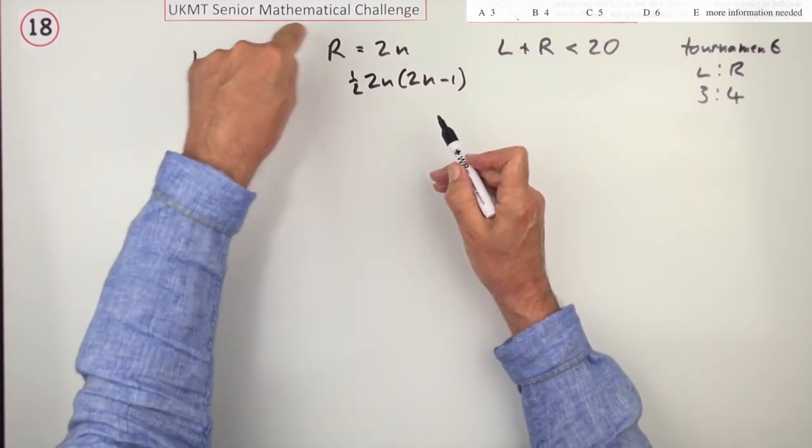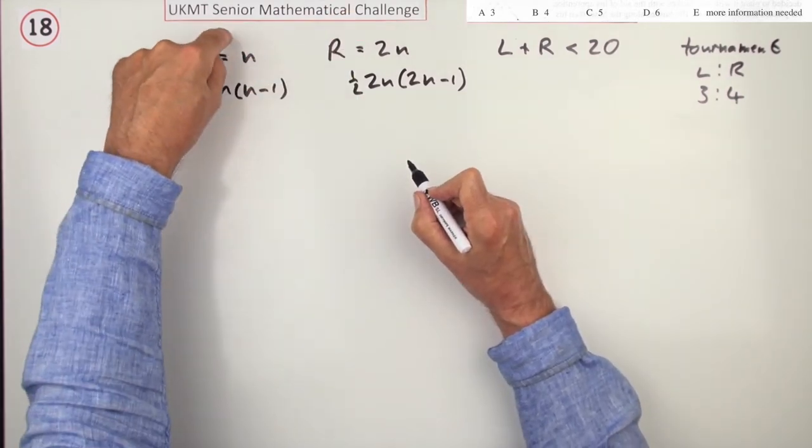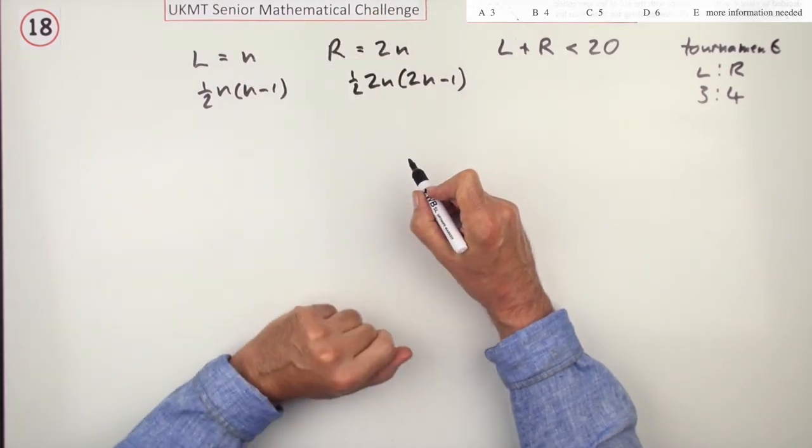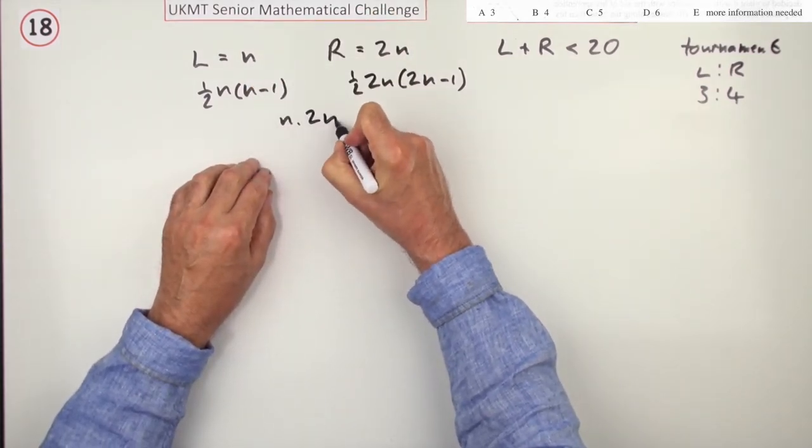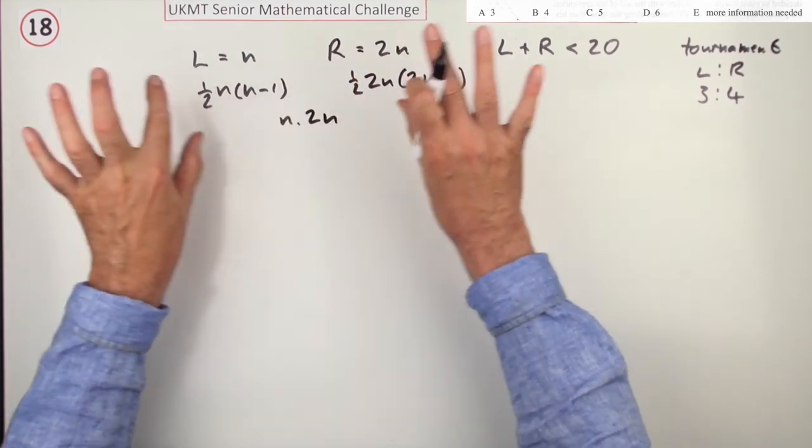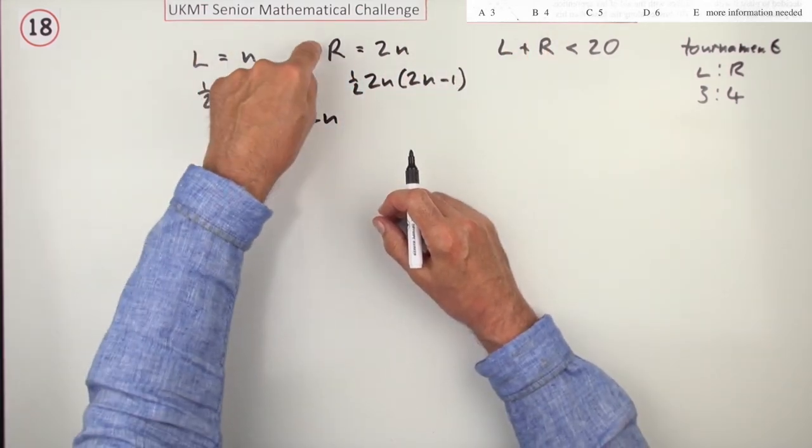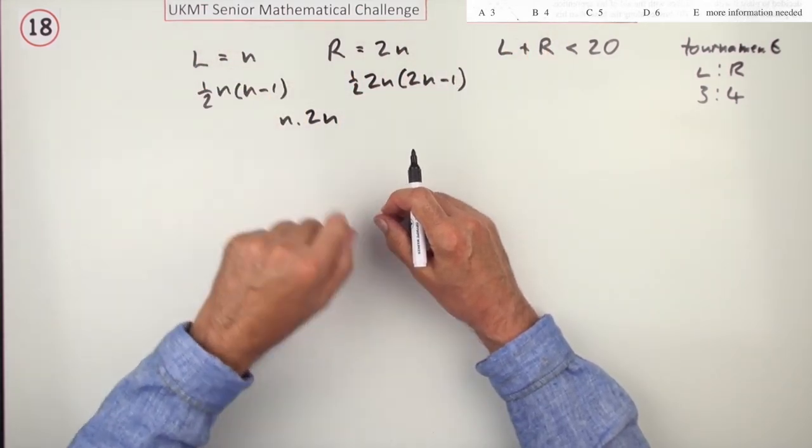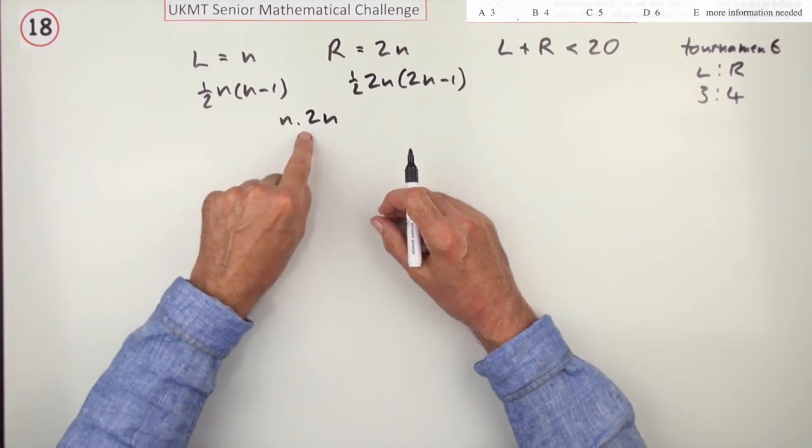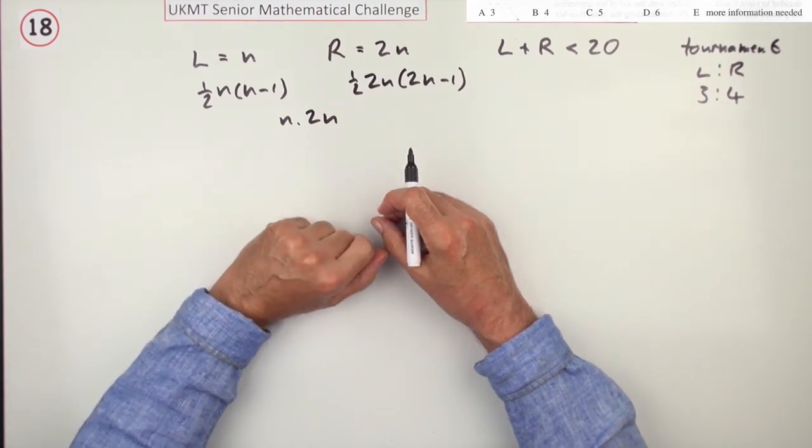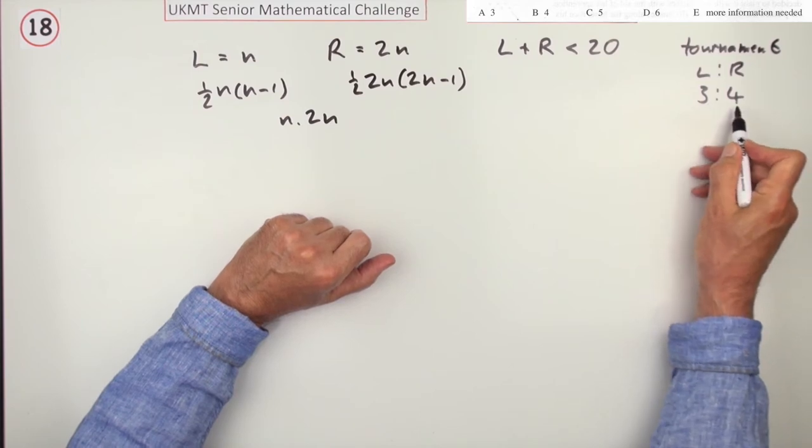Which means in the mixture, when left-handed players play right-handed players, each of those would play each of the right-handed and they're two separate groups. So A playing B is different from B playing A so it is just that. That must have been won by quite a number of left-handed players to bring the final result up to 3 to 4.